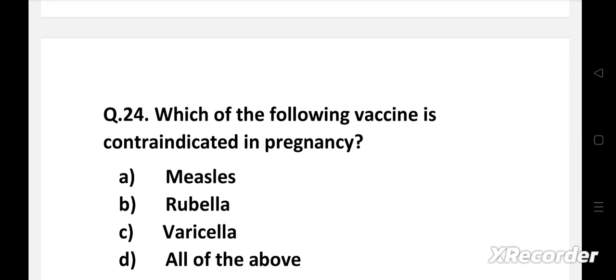Next question. Which of the following vaccine is contraindicated in pregnancy - option A: measles, B: rubella, C: varicella, D: all of the above.